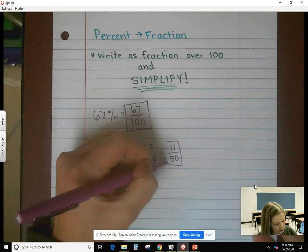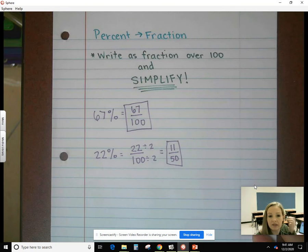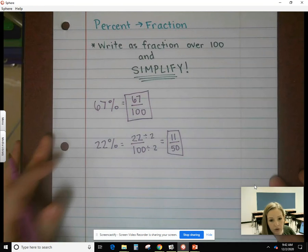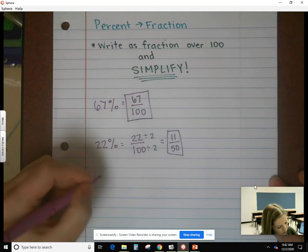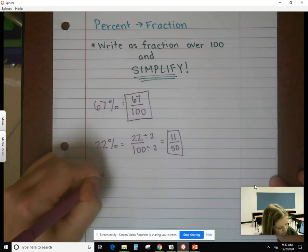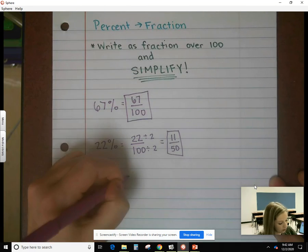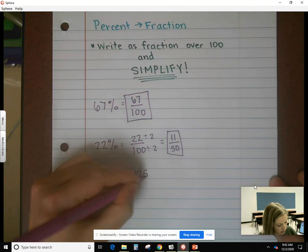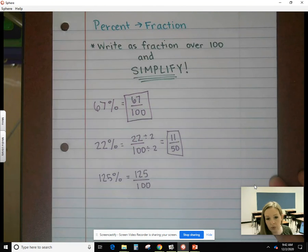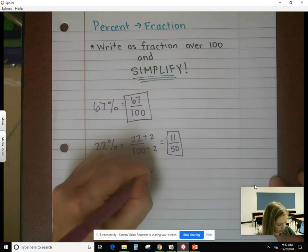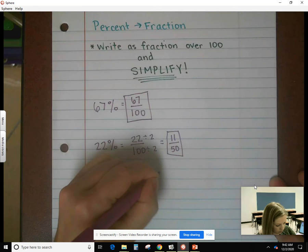11 is prime and it doesn't go into 50, so that means I'm done with that one. Now, every once in a while you will get a percent that is over 100, larger than 100%. So 125%, you still put over 100. It's just an improper fraction. I can simplify that. I could divide by 5, but I can divide by something even bigger because 25 goes into both of those.